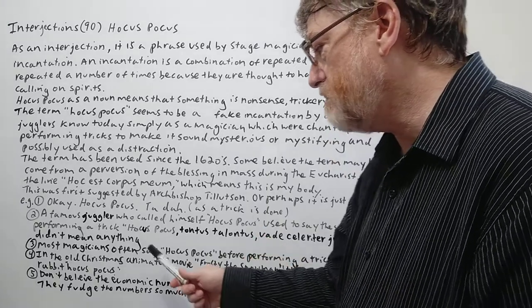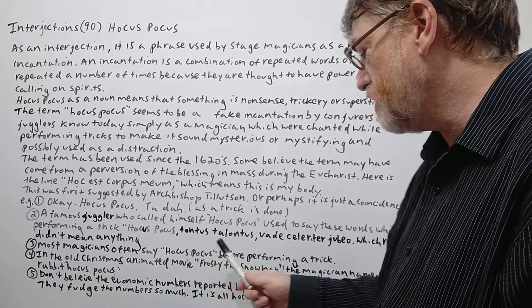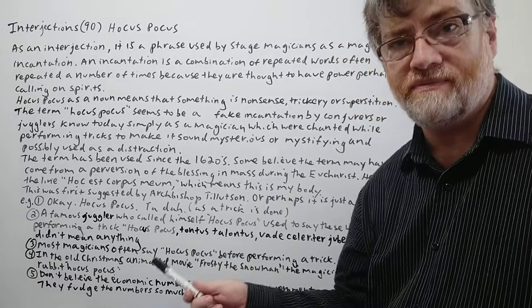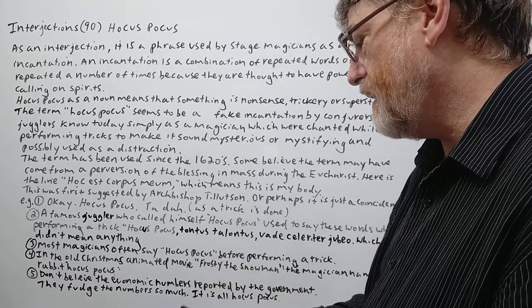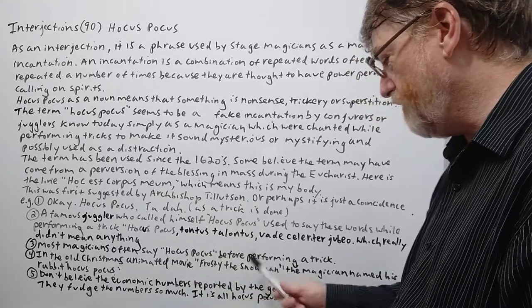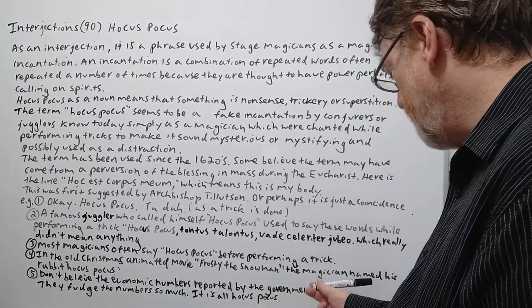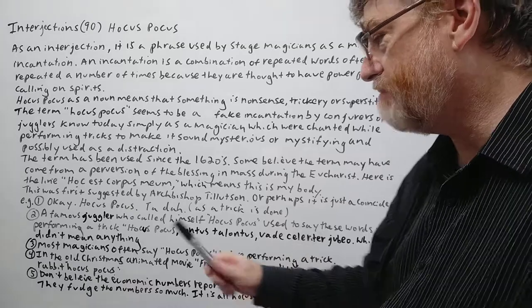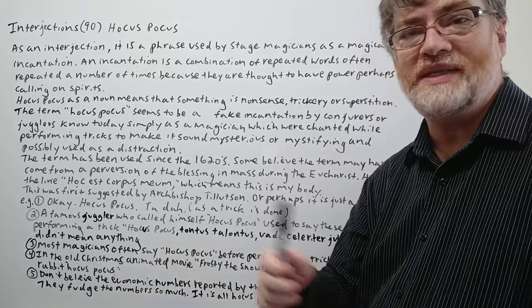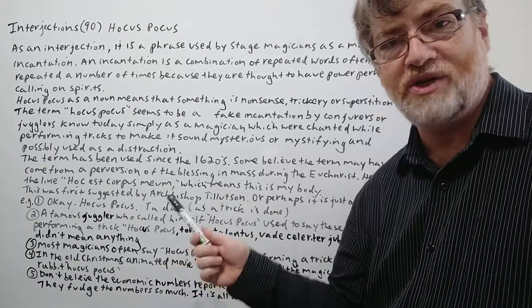Number three here. Most magicians often say hocus pocus before performing a trick. And in the old Christmas animated movie Frosty the Snowman, the magician named his rabbit Hocus Pocus and of course he would say hocus pocus before doing a trick as well.